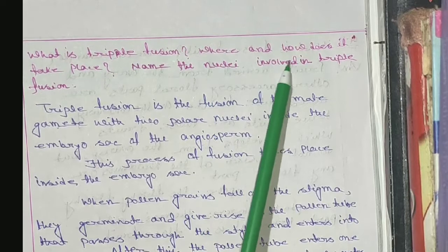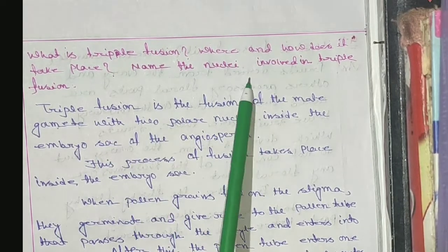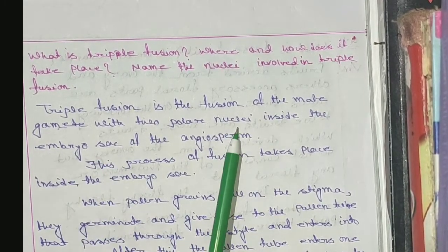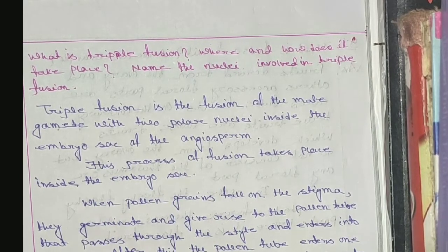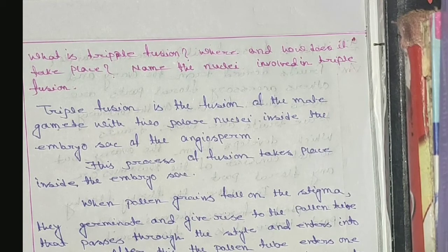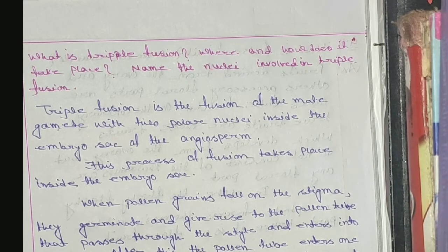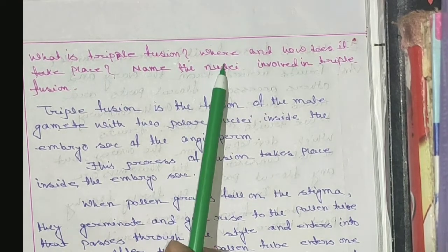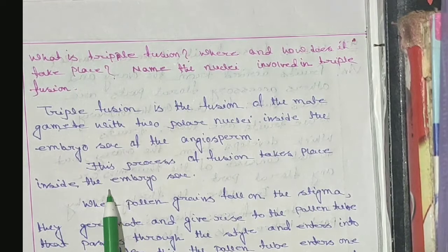What is triple fusion, where and how does it take place, and name the nuclei involved in triple fusion? Triple fusion is the fusion of one male gamete with two polar nuclei inside the embryo sac of an angiosperm. When one male gamete fuses with two polar nuclei, it is known as triple fusion. This process of fusion takes place inside the embryo sac.